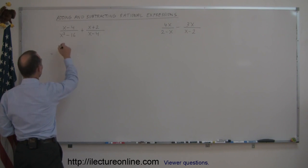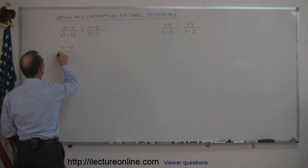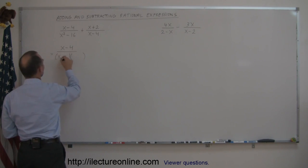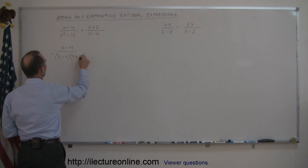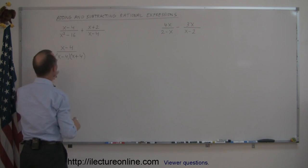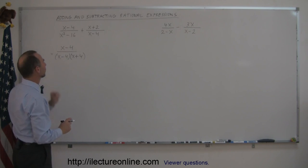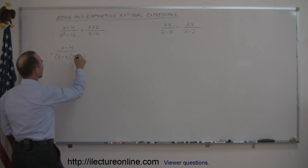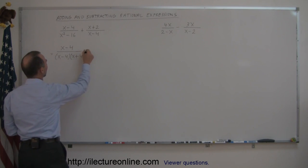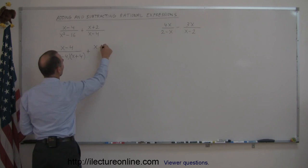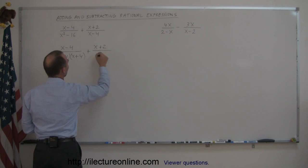We're going to factor the denominator of the first fraction. Because this is the difference of squares, we get an x and an x, a minus and a plus, and a 4 and a 4. If you multiply these together, you'll get back to that denominator, and then we still have the plus (x + 2) divided by (x − 4).